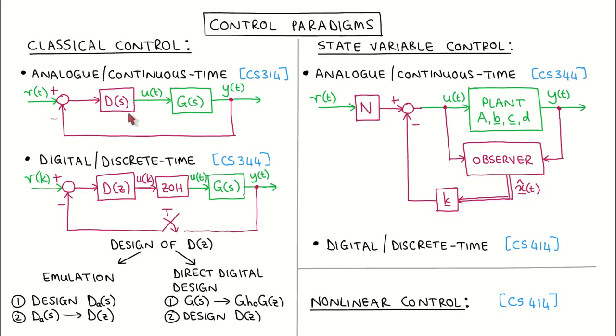However such a controller cannot be implemented in a digital processor so we revisited classical control in this module but now with the goal of designing a digital controller as a transfer function in the Z domain. We looked at two design approaches: design by emulation where we first design a continuous time controller and then discretize the controller, and direct digital design where we first discretize the plant model and then directly design a digital controller in the Z domain.